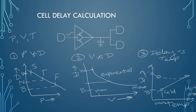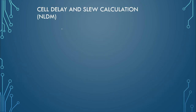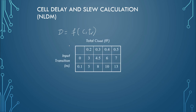The combination of P, V, and T makes one operating condition, which in the world of STA is called a scenario. For one scenario where P, V, and T are constant, we can say that standard cell delay is a function of input transition and output load. Mathematically, cell delay D is a function of output load capacitance and input transition time. In the standard cell library, it is characterized in terms of a lookup table, where one index is capacitance (output load) and another index refers to input transition time.